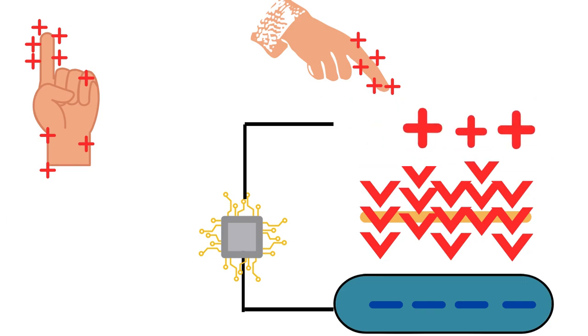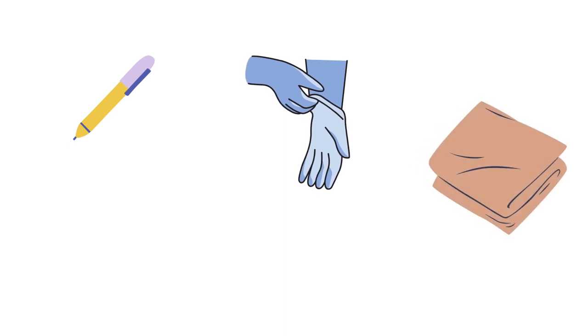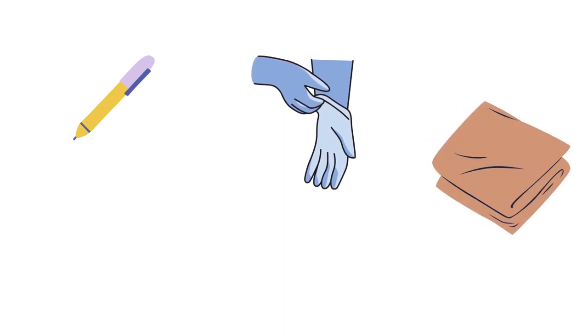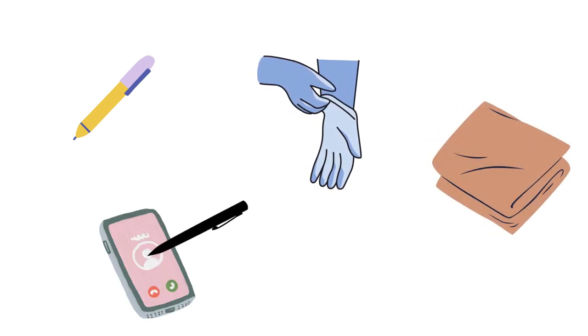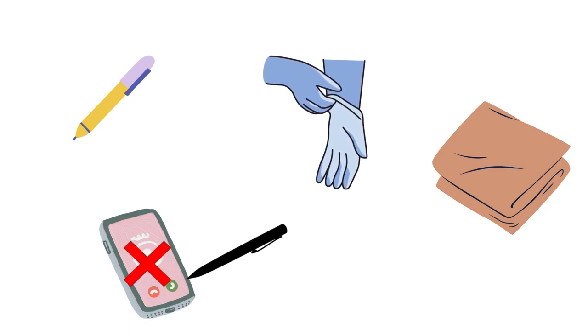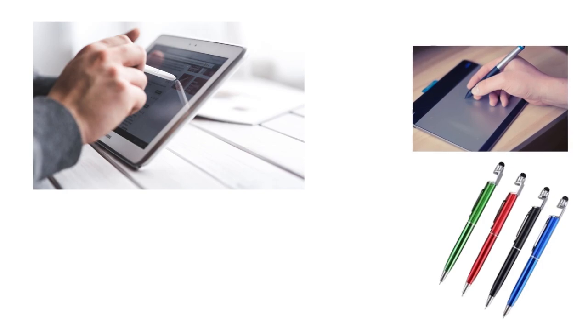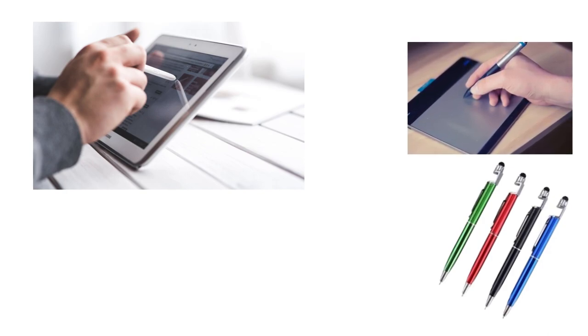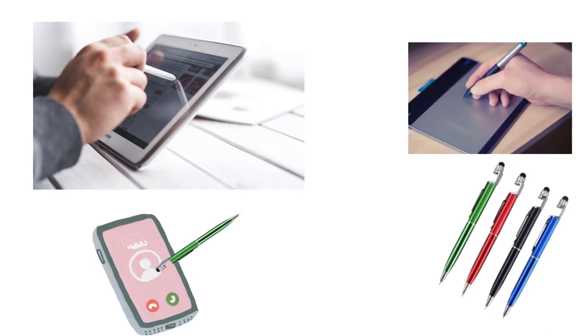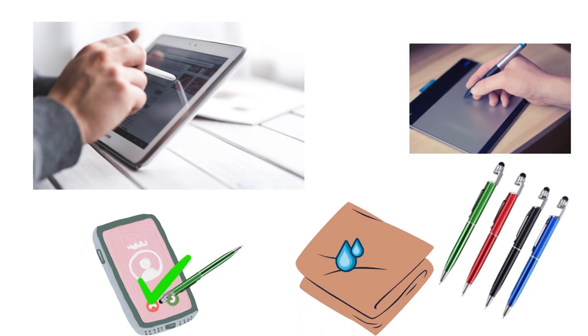The capacitive touchscreen works with materials that conduct electricity. Plastic, glass, and non-conductive materials won't work. If you use a regular stylus, you won't be able to use the touchscreen. You need a conductive stylus to use the touchscreen.